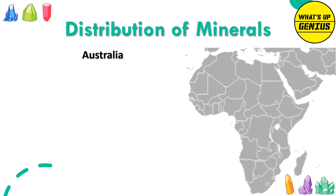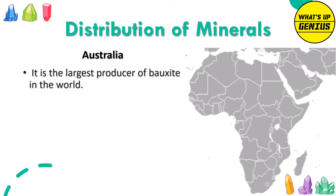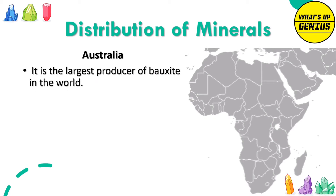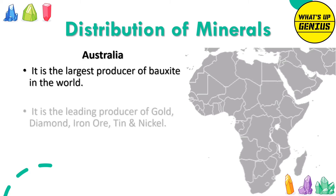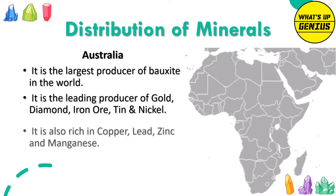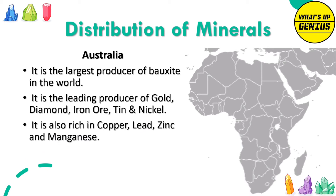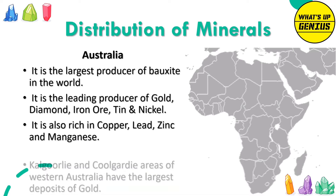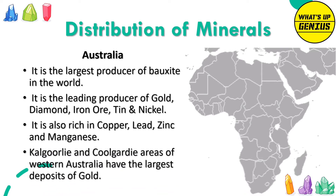Australia is the largest producer of bauxite in the world. It is also the leading producer of gold, diamond, iron ore, tin and nickel, and is rich in copper, lead, zinc and manganese. The Kalgoorlie and Kalgoorlie areas of Western Australia have the largest deposits of gold.